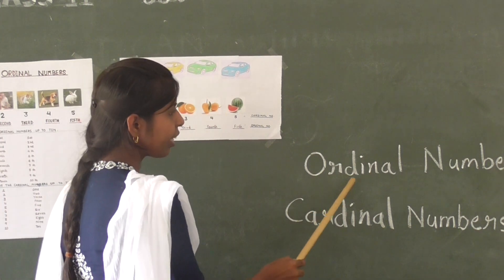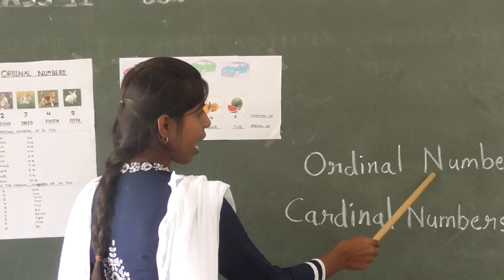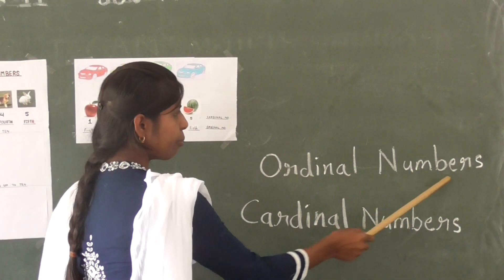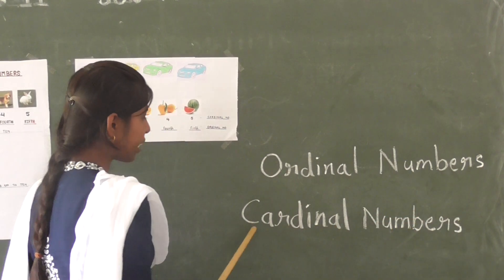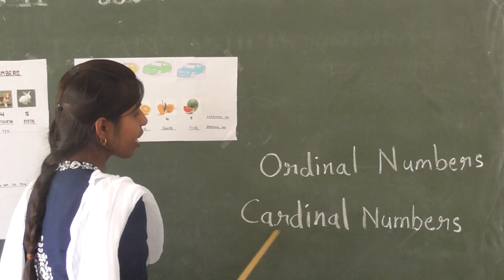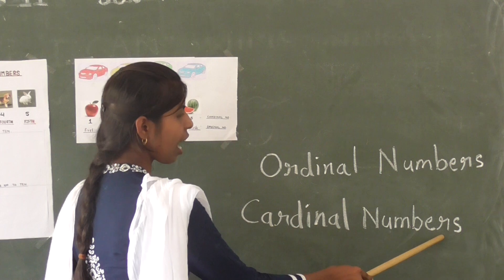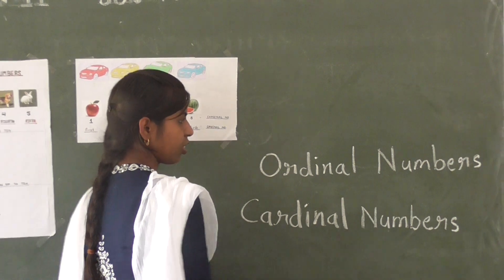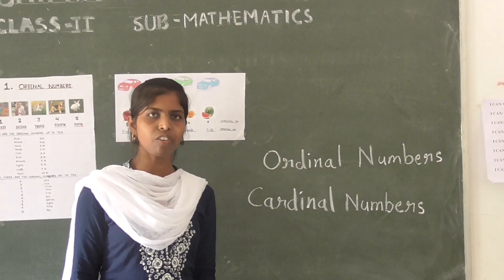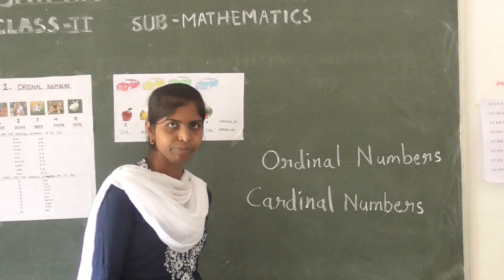Ordinal Numbers show the position or order of things. Cardinal Numbers tell the quantity.